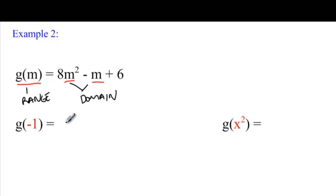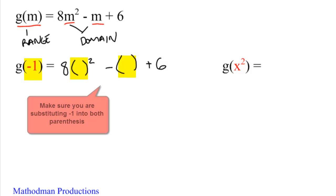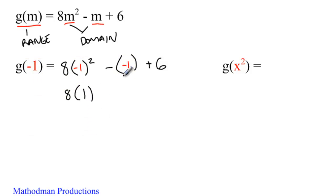I always like starting off the problem by rewriting the equation, and instead of my m's, my domains, I replace them with parentheses. That way, all I have to do in the end is put in the number that I have to, substitute in what it tells me to, negative 1. From here on out, just simplify. 8 times negative 1 squared is the same as 8 times 1. Negative negative 1 is plus 1 plus 6, and add them all up at the end. 8 plus 1 plus 6, that's just 15.